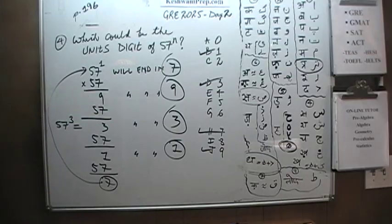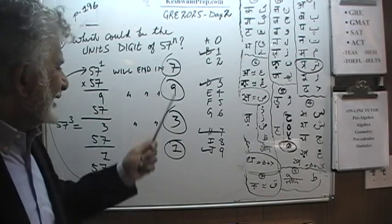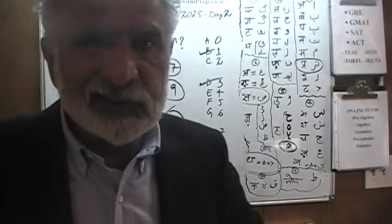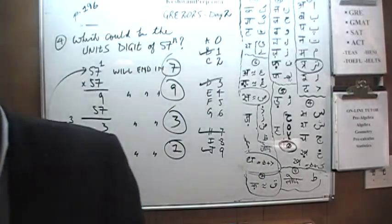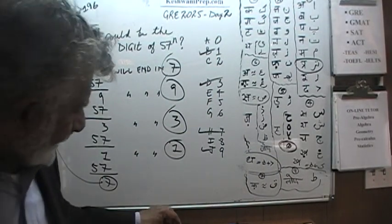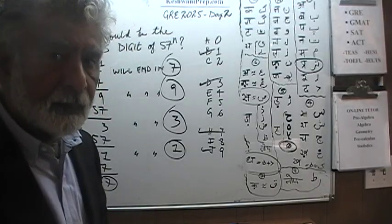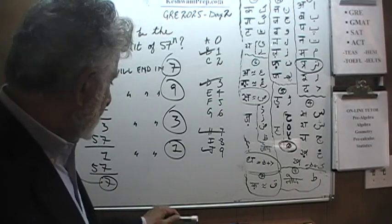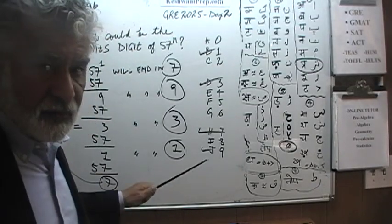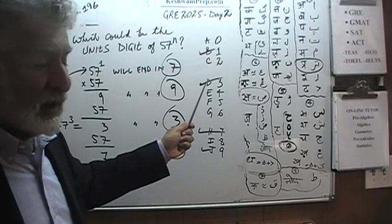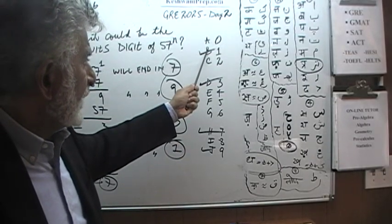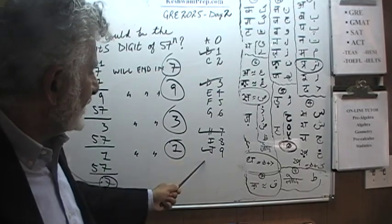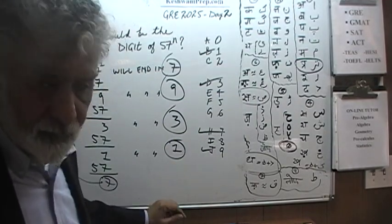And the cycle starts all over again — 7, 9, 3, 1 — repeating continuously. Make sure you mark all the answer choices in the exam. The correct answer choices here are B, D, H, and J. I will see you tomorrow. Bye now.